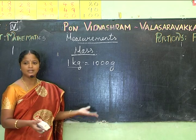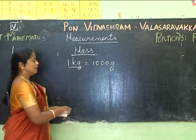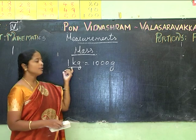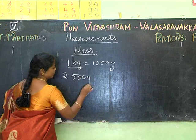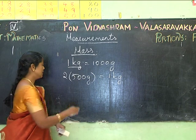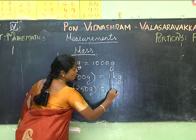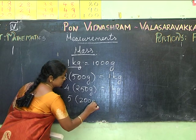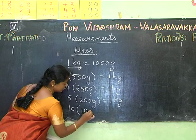One kilogram equals 1000 grams. For example: two 500-gram weights make 1 kg (500 + 500 = 1000 g = 1 kg). Similarly, four 250-gram weights equal 1 kg; five 200-gram weights equal 1 kg; and ten 100-gram weights equal 1 kg.